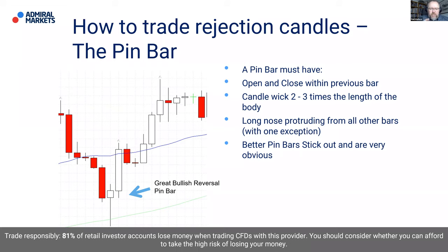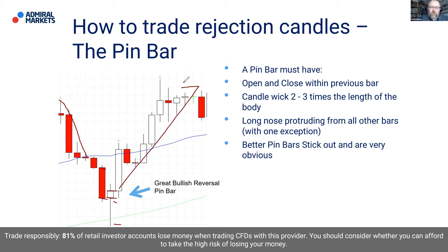The pin bar must have its open and close within the previous bar, a wick two to three times the length of the body, a long nose protruding from all other bars. Better pin bars will be very obvious — it's a visual signal. In this example, price has been trending down. The open and close of this pin bar are within the body of the previous candle, the wick is two to three times the length of the body, protruding and sticking out — giving an indication of likely direction for the next couple of sessions.